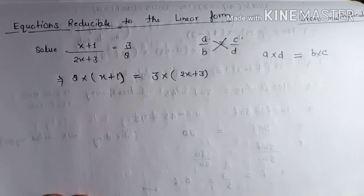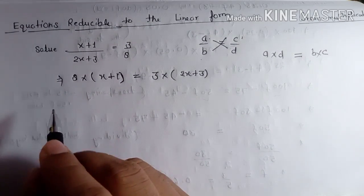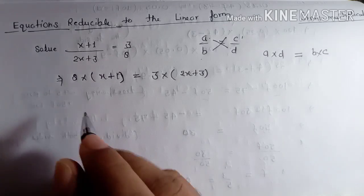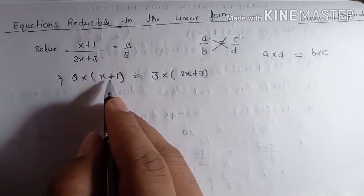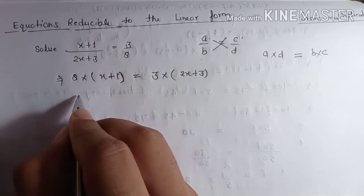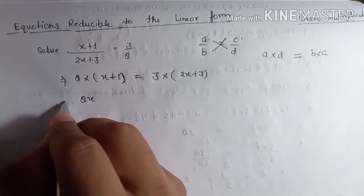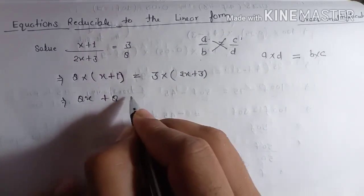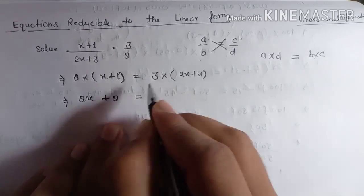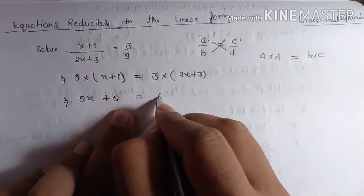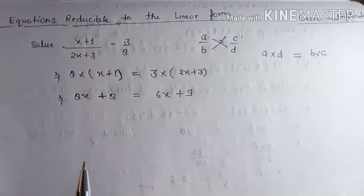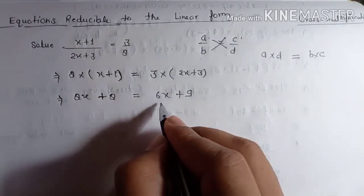Now you can see your question is going to be simplified. Multiply this by eight: eight multiplies x becomes eight x, and plus eight is equal to three times six x plus nine, which is 6x plus 9.